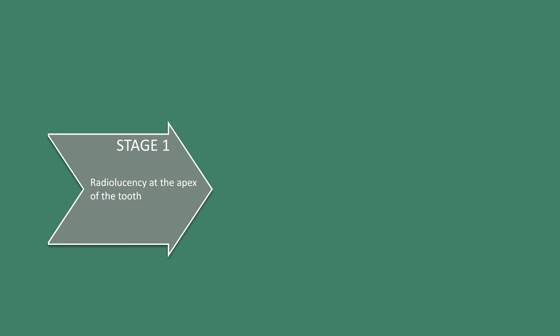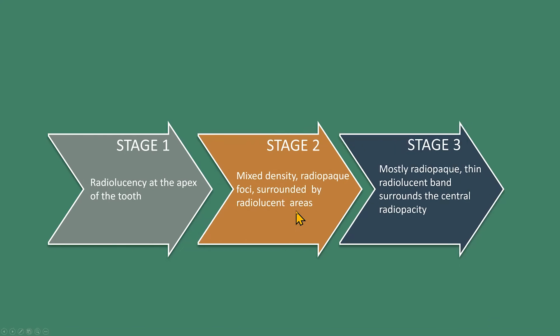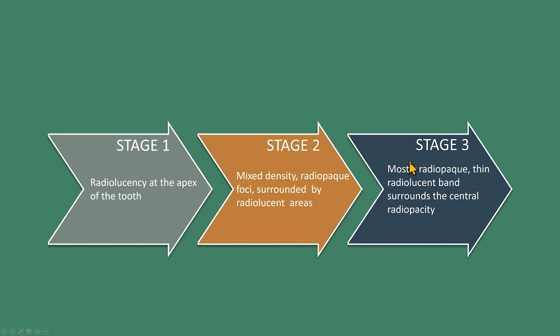In stage two, the uniformly radiolucent areas are replaced by areas of radio-opacity. The lesion has mixed density with areas of radio-opacity and areas of radiolucency; the radiopaque masses are surrounded by radiolucent areas. In stage three, the lesion is mostly radiopaque, and a thin radiolucent band can be visible around the radiopacity.